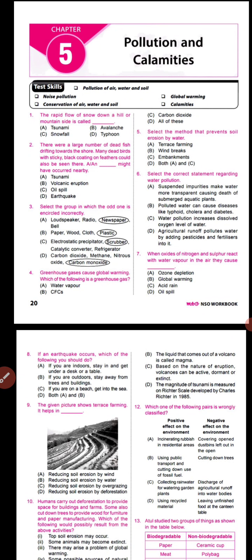Let us start with question number one. Question number one says that the rapid flow of snow down a hill or mountain slide is called what. The answer is avalanche — the rapid flow of snow down a hill or mountain is called an avalanche.